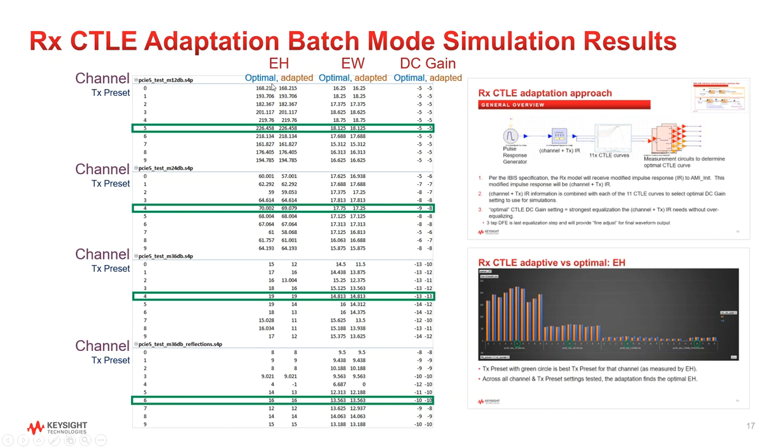The values on the left are the optimal values found from the 440 case static setting sweeps, where the values on the right are found from the 40 case adaptive setting sweep. The rows highlighted in green represent the best setting for each channel.